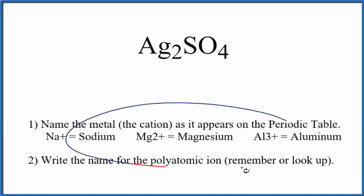We use these rules here to write the name for Ag2SO4. So first we'll write the name of the metal as it appears on the periodic table. Ag, that's silver.